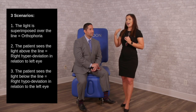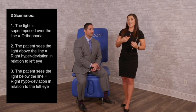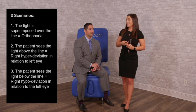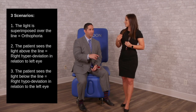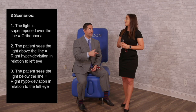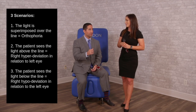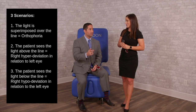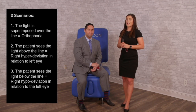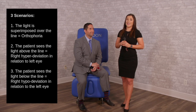A hyper deviation is relative to the left eye, so further testing is needed to determine whether it's actually a hyper of the right eye or a hypo of the left eye. Cover-uncover and cross-cover testing are the same tests used for this. Remember, we always reference the hyper-deviated eye when documenting exam findings.